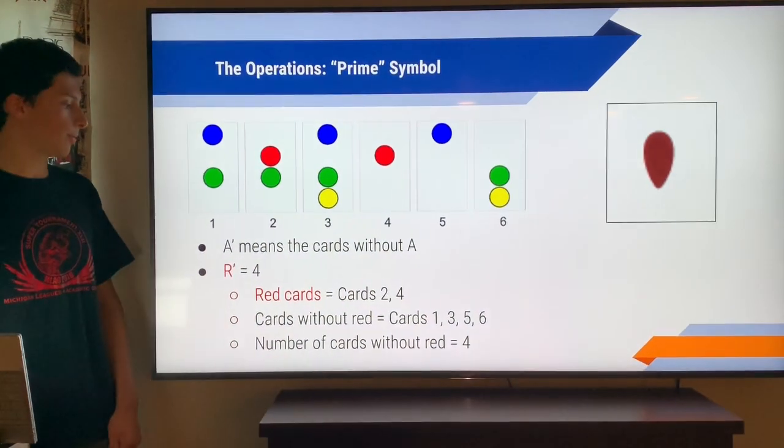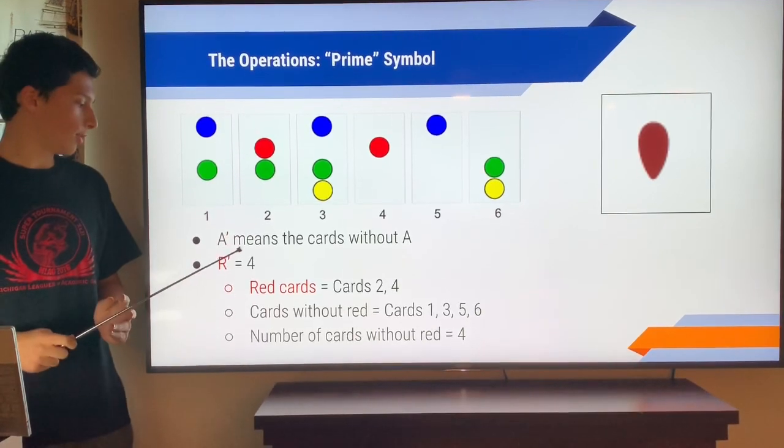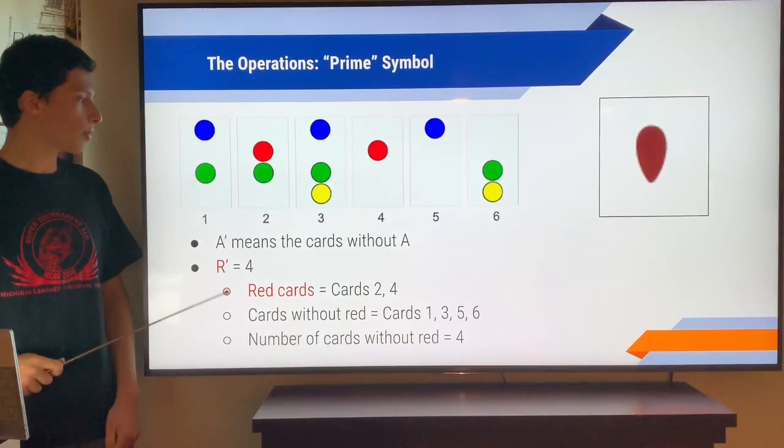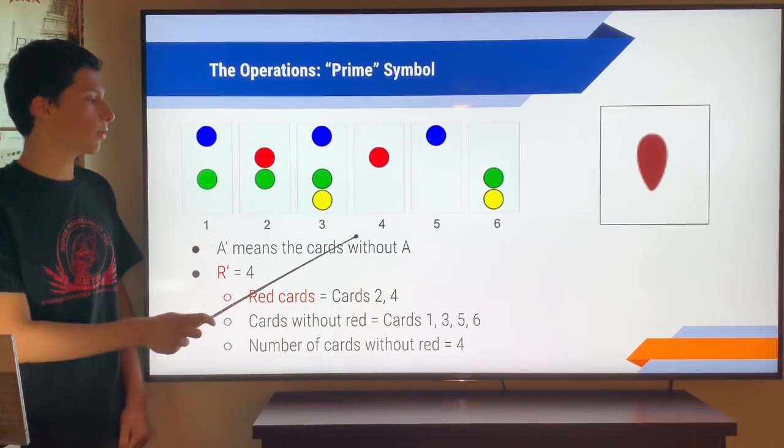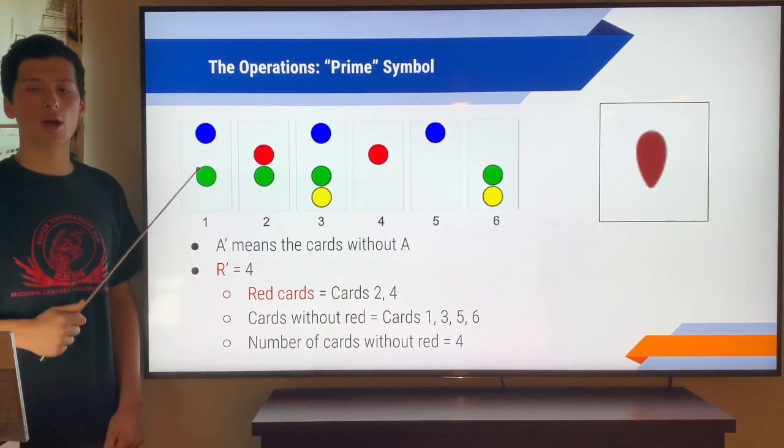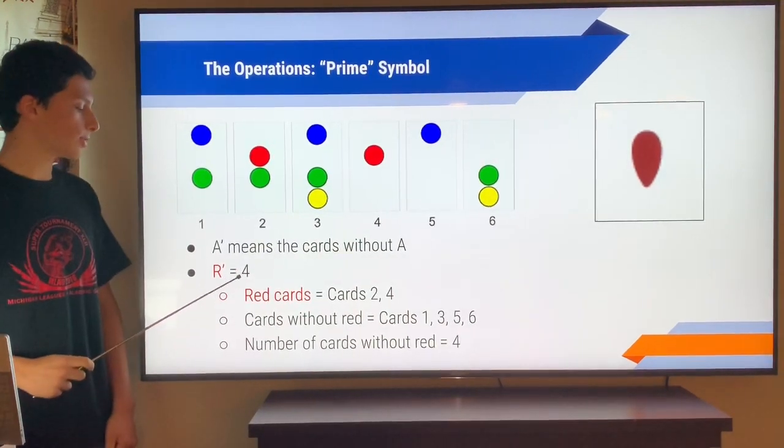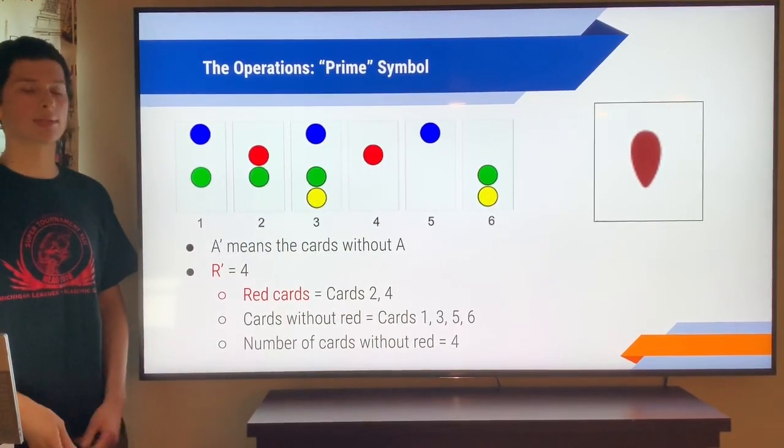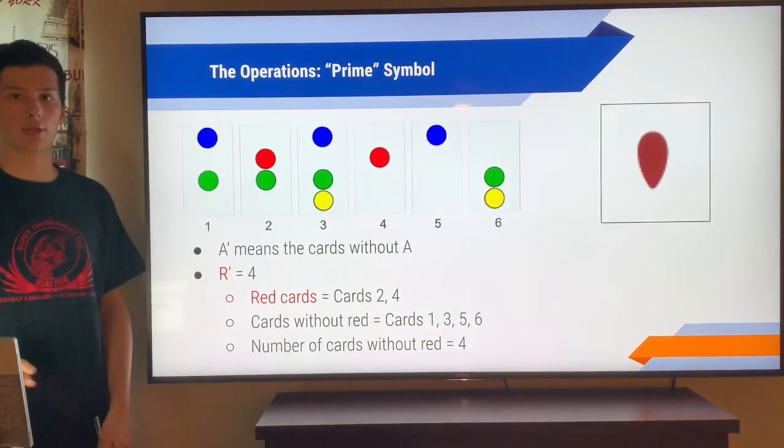Finally, we have the prime symbol. What prime does is it's basically like a reverse symbol. So if we had red prime, we would look at all the cards without red. So cards 2 and 4 have red. So red prime, all the cards without red, are cards 1, 3, 5, and 6. So the answer to that would be 4. A prime symbol is represented by this apostrophe symbolish looking thing.